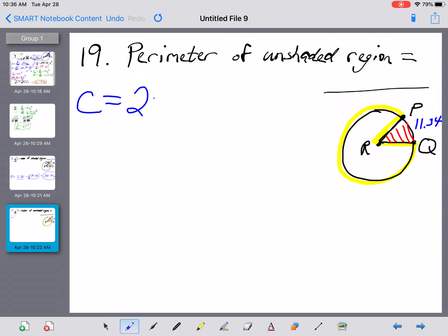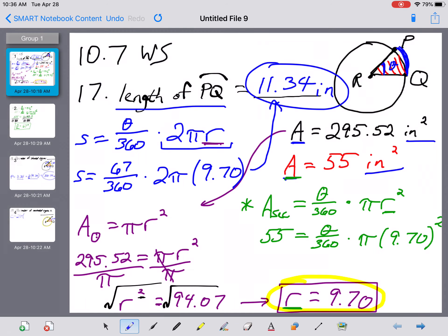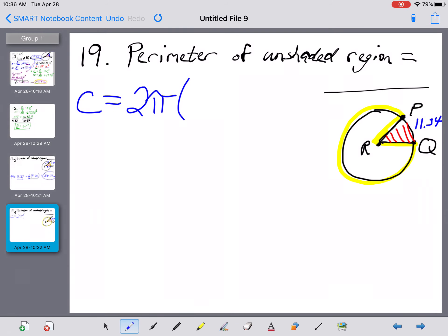It's 2 times pi times the radius of, I believe that was 9.70. Let me just double check that, and it was. So 9.70.